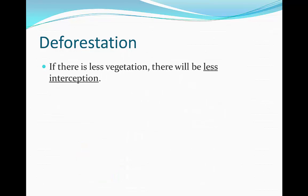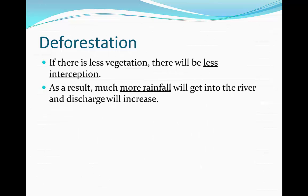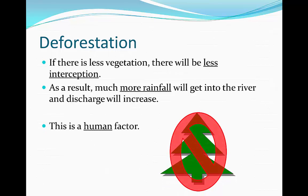Deforestation is another factor. If there's going to be less vegetation in an area, there's going to be less interception. When it rains, the vegetation normally takes up more of the rain that falls in, so with less vegetation, much more rainfall will get into the river and its discharge will increase.